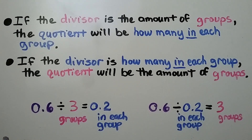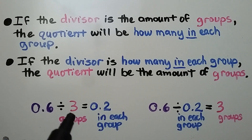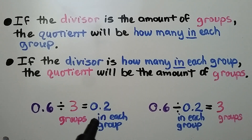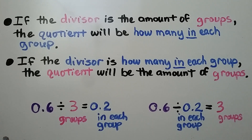If the divisor is the amount of groups, the quotient will be how many are in each group. And if the divisor is how many in each group, the quotient will be the amount of groups. Here the divisor is how many groups — there'll be 2 tenths in each group. If the divisor is how many in each group, then the quotient will be how many groups.